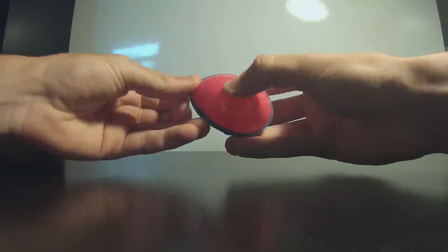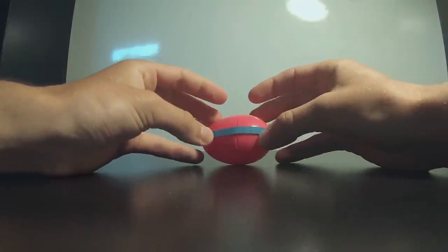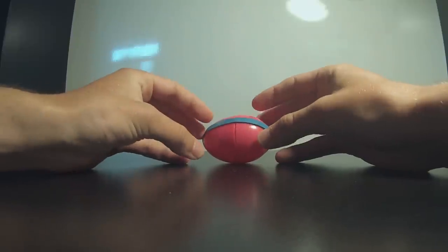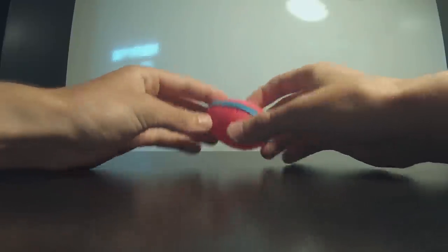Then we're just going to put the rubber band on and we'll make sure it's nice and tight so that it will stop it from detonating inside of our vests. And there you have it, it's very simple.